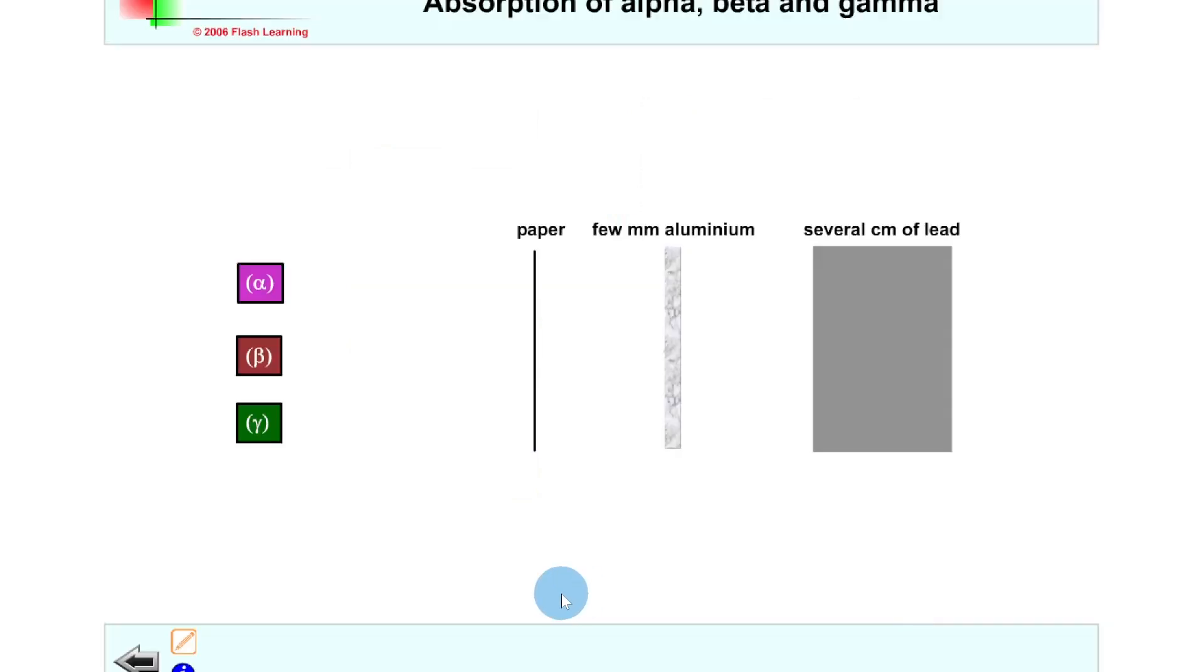So here we've got a similar setup to what we just saw in the notes. We've got a single sheet of paper, a few millimeters of aluminium, and then several centimeters of lead. We can also click each of these types of radiation to have them incident on the setup here.